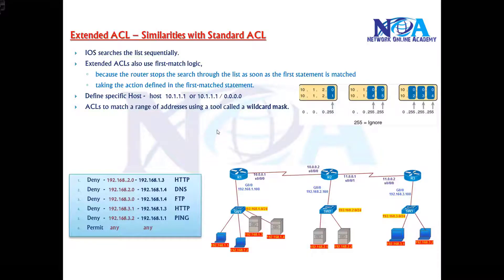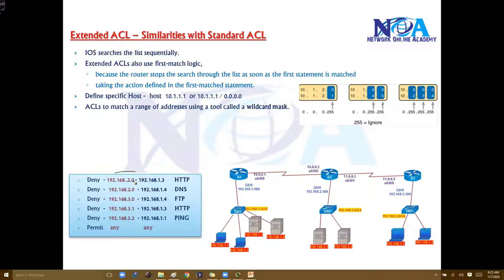The difference here is that we will be matching both source and destination. So if your source and destination networks are ranges you want to match, we use a wildcard mask for both if required.